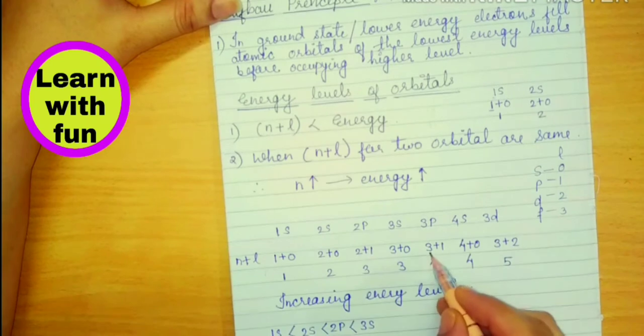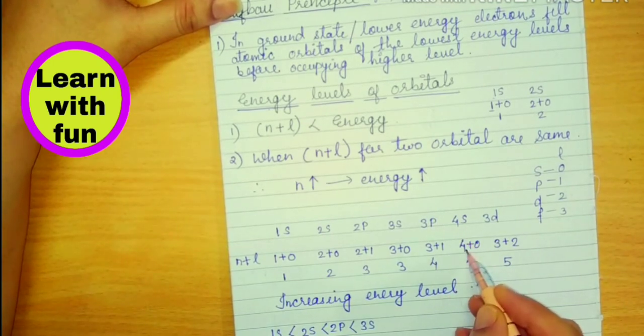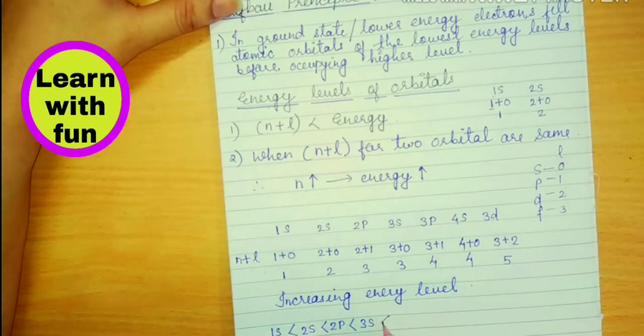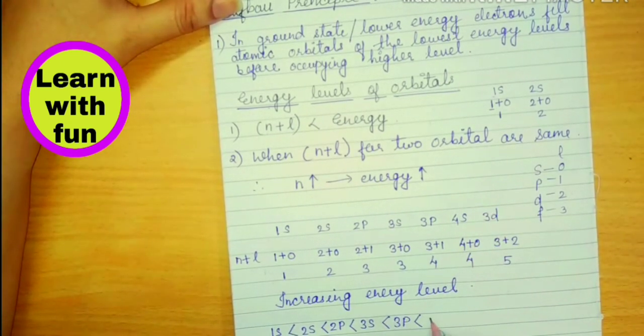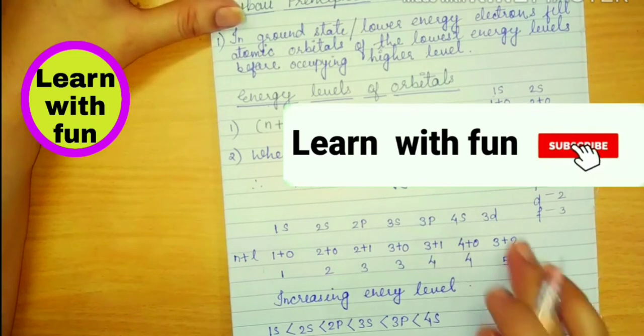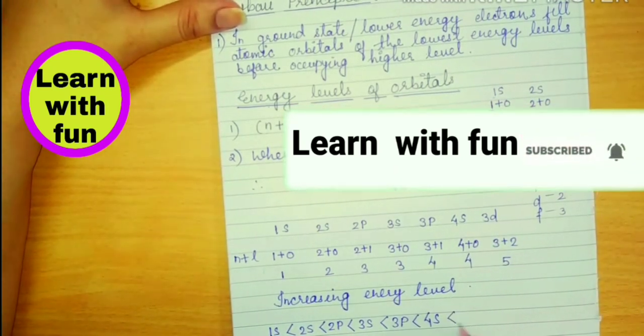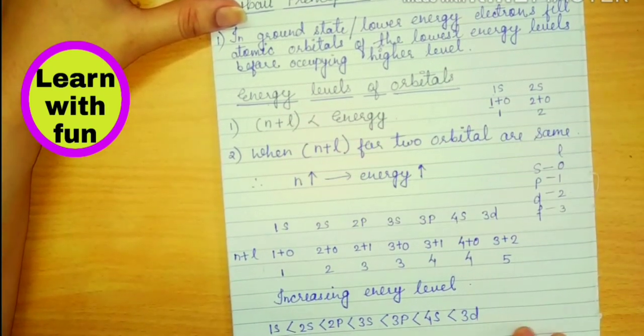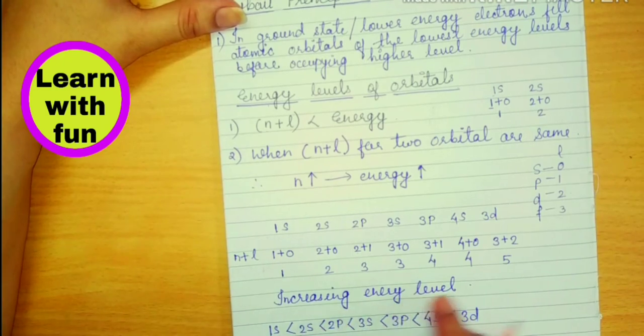Now after 3S which orbital will come? Both have energy 4. So now tell me whose 4 is larger? 4S has larger 4. It means its energy is higher. So this energy is less. So this will come here. This is 4S. And then 5 last. So this is the orbital according to increasing energy level.